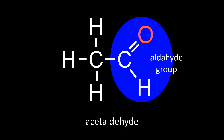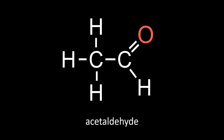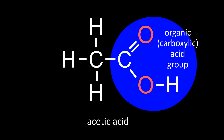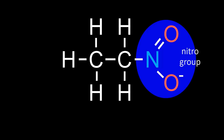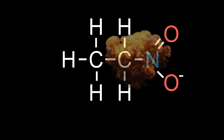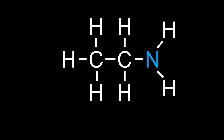This is the aldehyde group — you may have heard of the preservative formaldehyde. This molecule is called acetaldehyde. Organic acids, also known as carboxylic acids, are attached to a very wide range of carbon structures. This one is acetic acid, which is the acid found in vinegar. NO2 is the nitro group, found in most explosives. And here is the amine group, which when coupled to an organic acid group on the other side, creates the amino acid glycine.